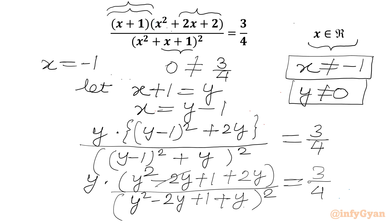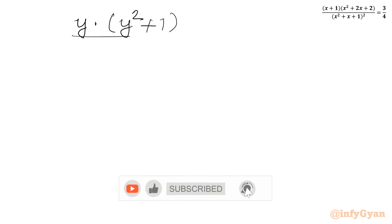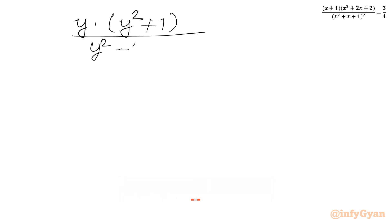Now we can cancel minus 2y and plus 2y in the numerator. So our numerator will be y times y squared plus 1, and the denominator will be y squared minus y from these two terms, plus 1, whole square, equal to 3 over 4. So I can write the equation: y times (y squared plus 1) over (y squared minus y plus 1) whole square, equal to 3 over 4, where y cannot be equal to 0.